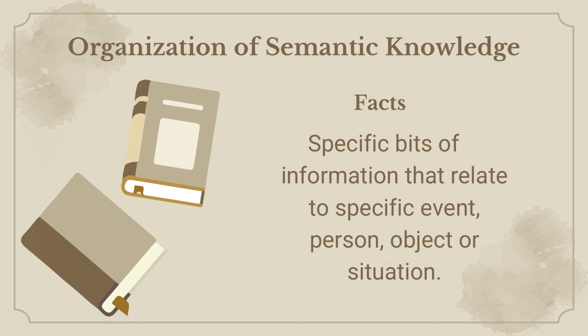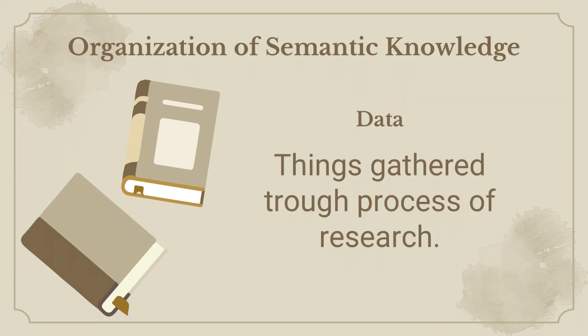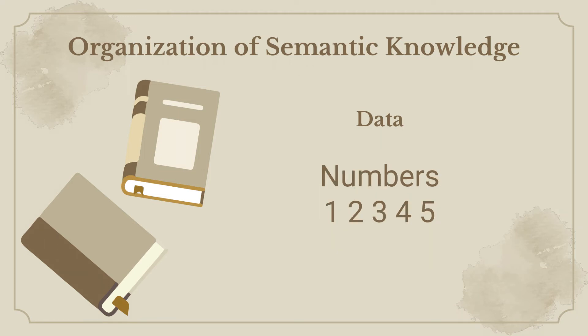Facts should be differentiated from data, information, ideas, and wisdom. Data are things gathered through the process of research. For example, numbers 1, 2, 3, 4, 5, and so on are data. These are not information because they are meaningless. They become meaningful only when they are interpreted.